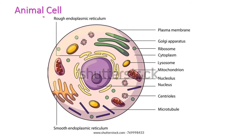This is the animal cell. Here we can see the plasma membrane, then Golgi apparatus, ribosomes. Inside the plasma membrane is filled with cytoplasm, then lysosome, mitochondria. The central part of the cell — the nucleus — is clearly seen with nucleolus, and centrioles are present. Microtubules are present, and both rough and smooth endoplasmic reticulum are present here.